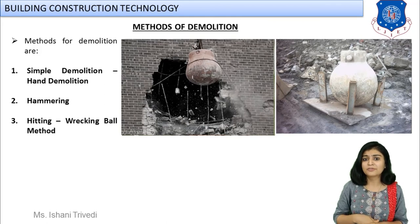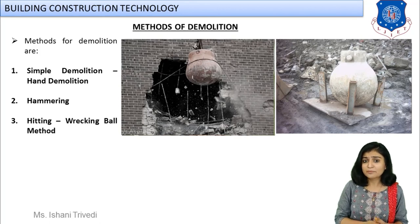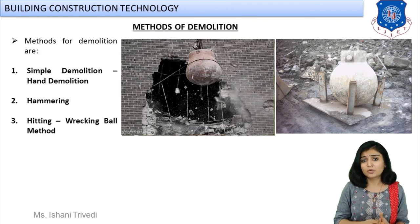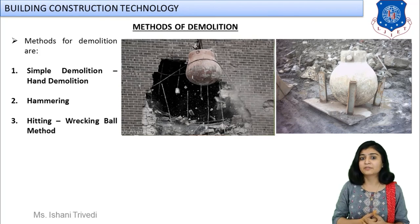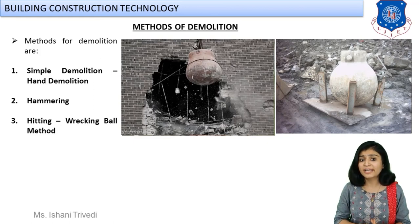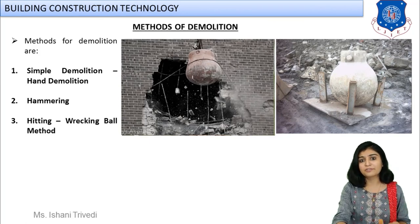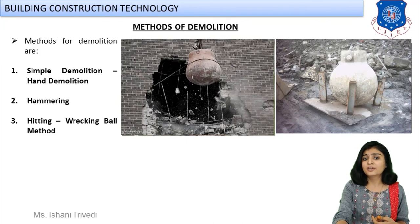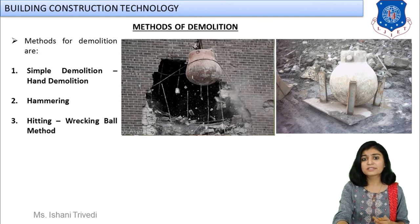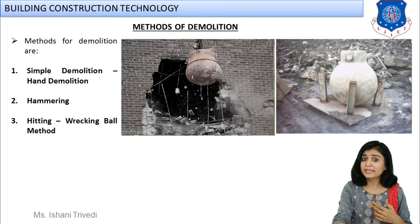Next is demolition by wrecking ball method — a hitting method. A steel ball tied to a crane is hit against the structure. This can only be done when the surrounding area is empty and isolated, because debris falls anywhere in this method. A steel ball weighing around 1.5 to 2 tonnes is used, and you can hit it vertically or horizontally depending on the requirement.